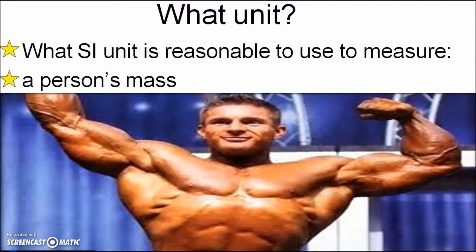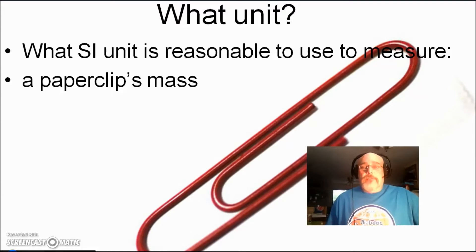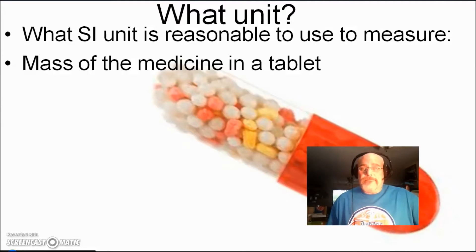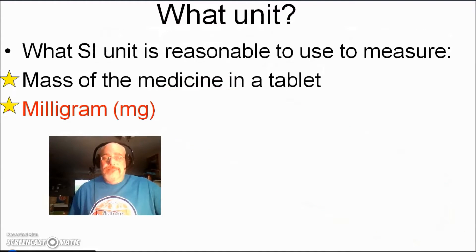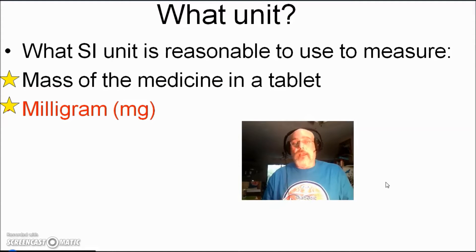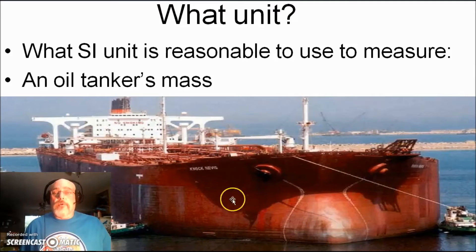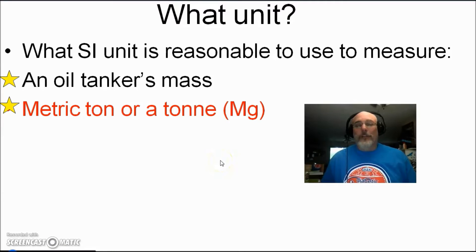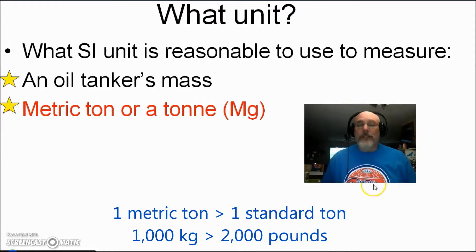We would prefer to use the kilogram. So the kilogram is an excellent choice for a person's mass. A paperclip — the gram would be the best choice. For solid medicines like medicine tablets and pills, we're going to use milligrams. There are one million milligrams in every kilogram. For something really big like an oil tanker, we'd prefer to use the metric ton, which is 1,000 kilograms.